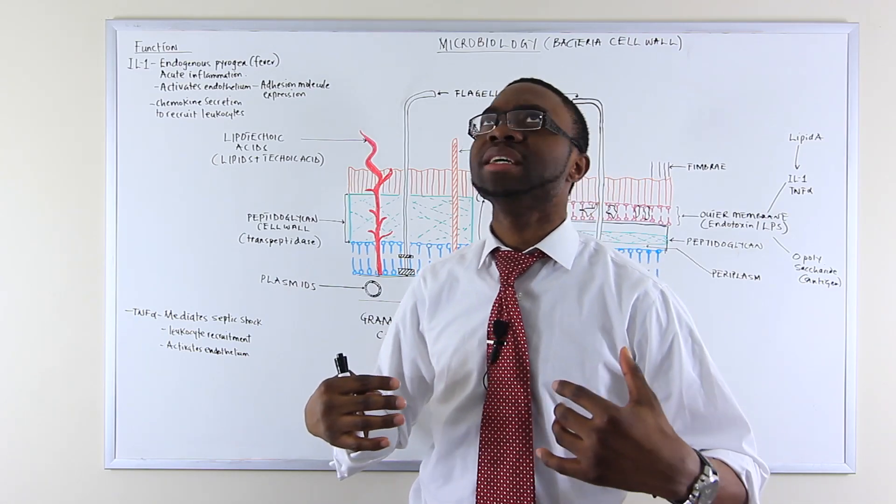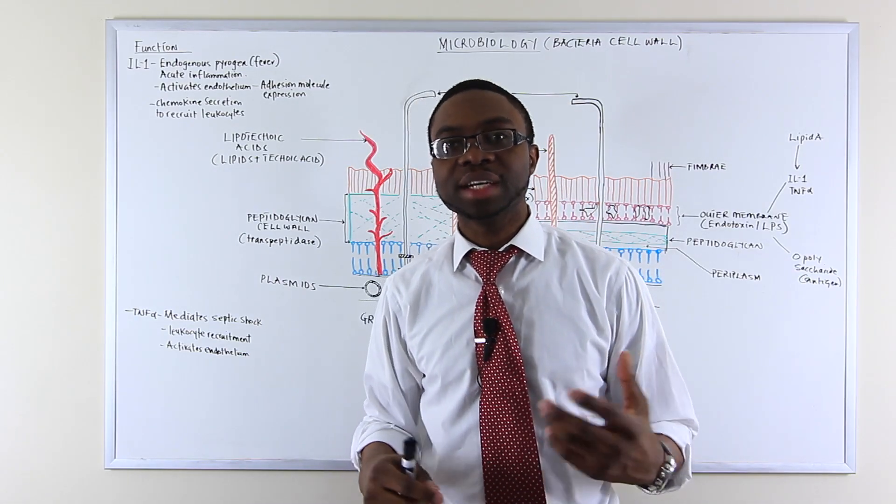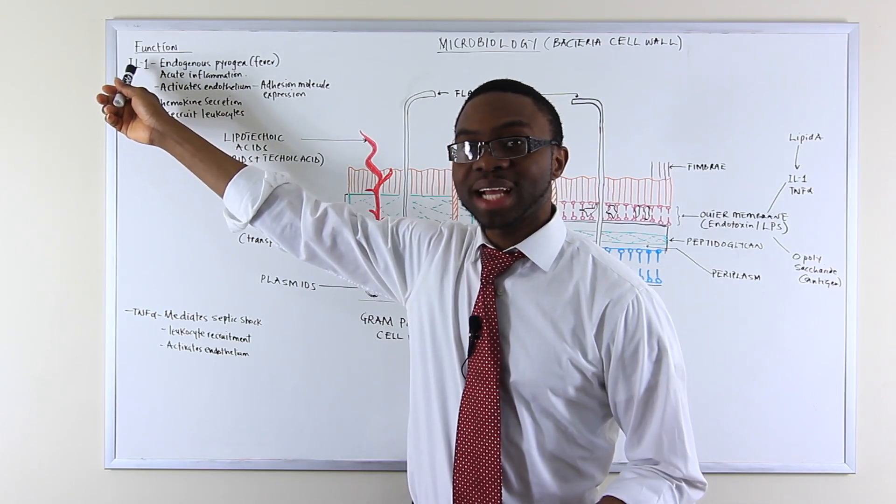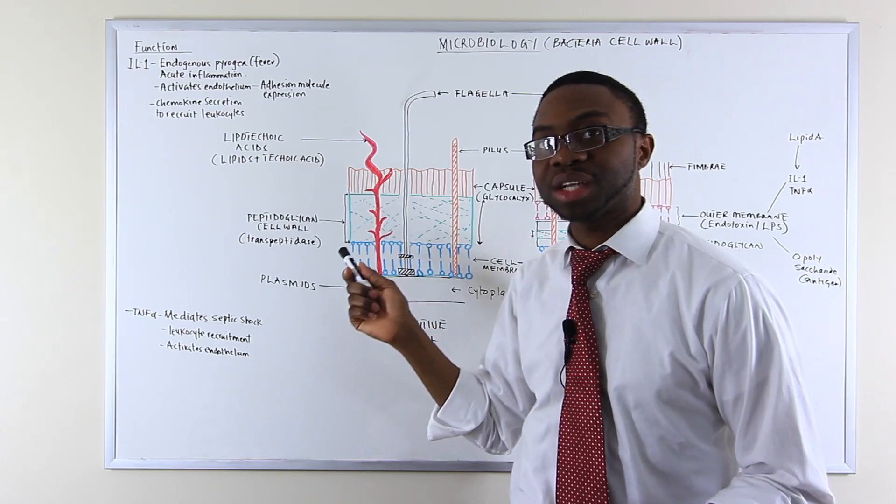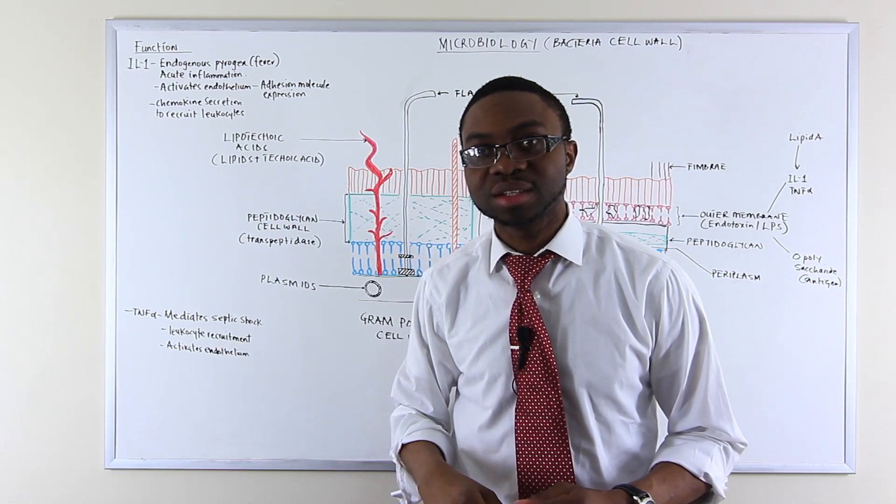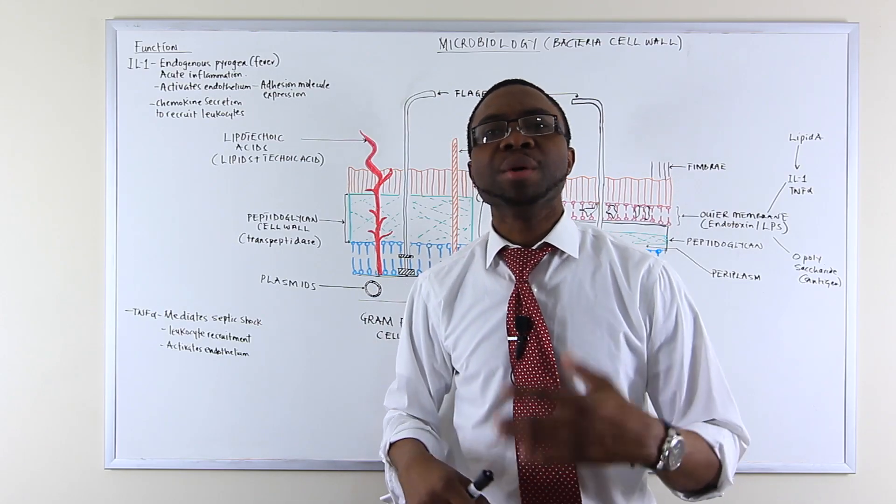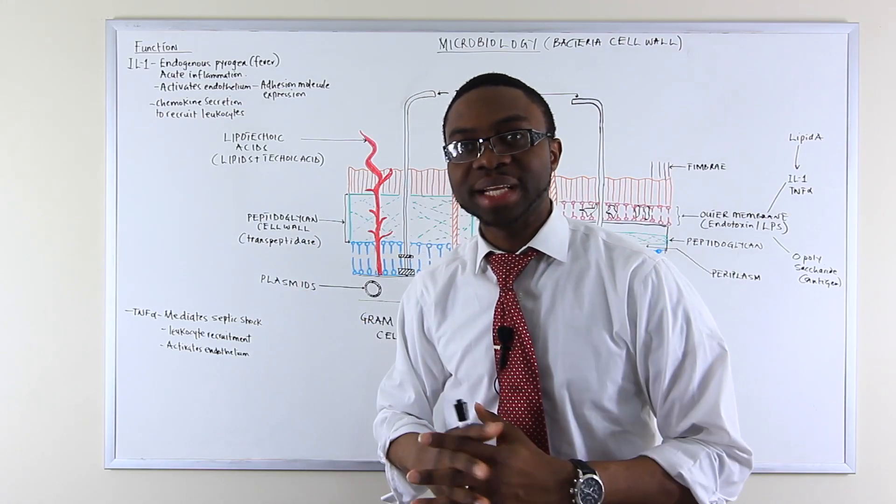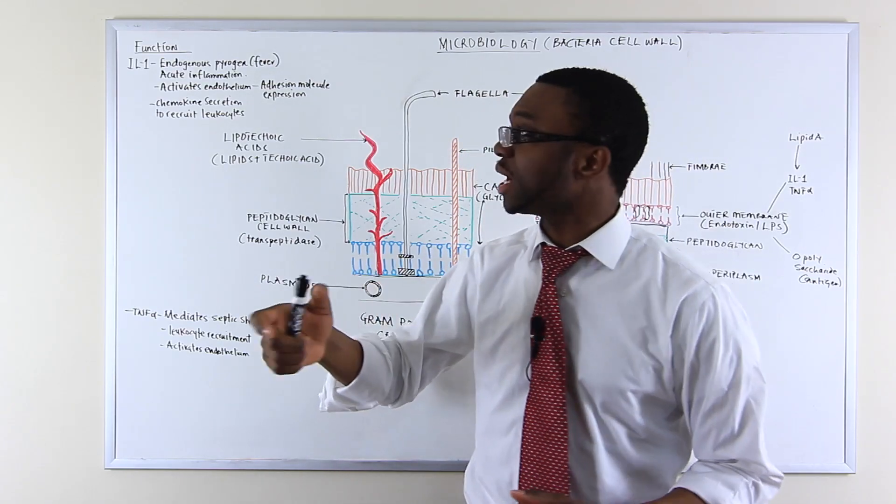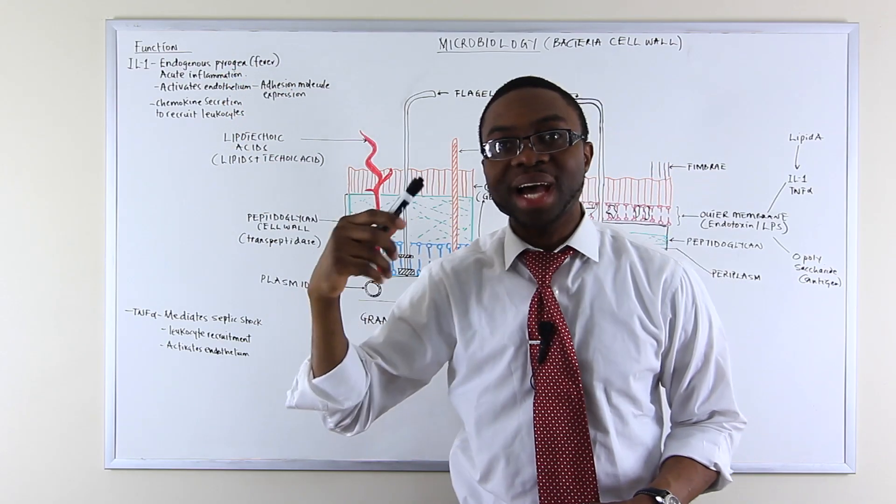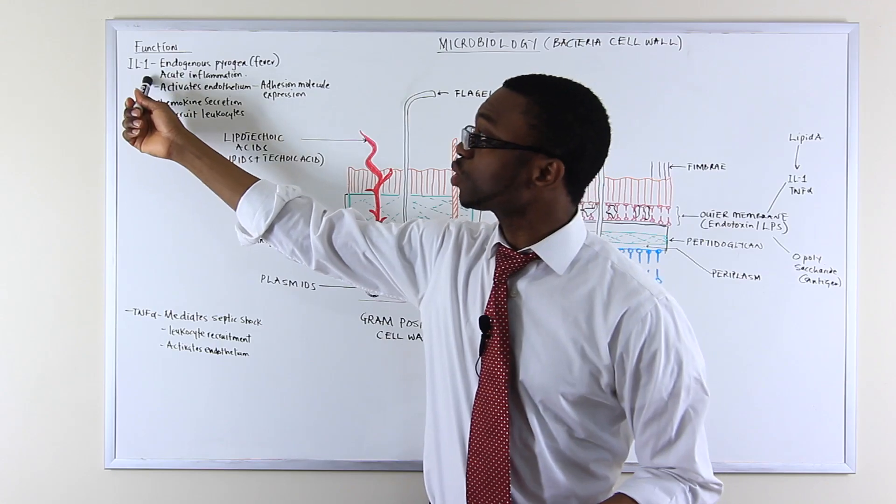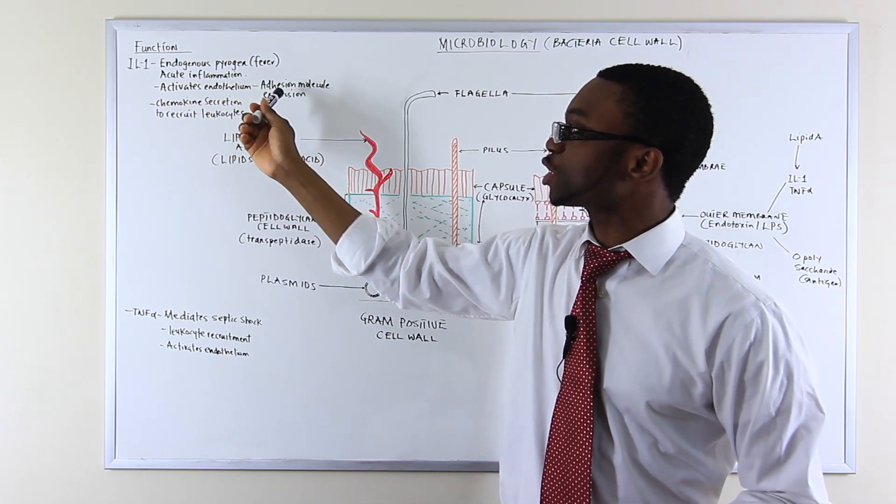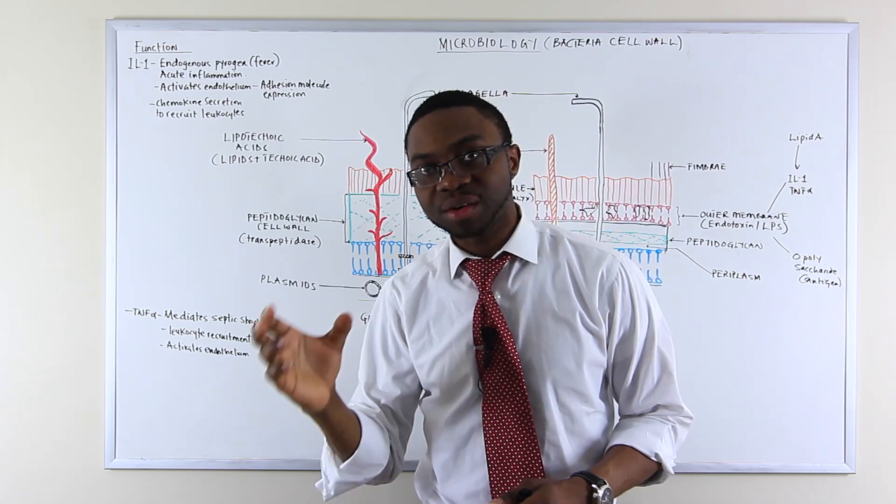What does that mean? Endogenous, inside my body. Pyro means fever. That means it's a fever inducer. When patients develop fever when they have a bacterial infection, interleukin-1 is being released. The way that's released is because of this lipotechoic acid on the surface of bacteria that causes the body to release these interleukin-1s. It also causes acute inflammation. It activates the endothelium causing expression of adhesion molecules. And it's also a chemokine secretion to recruit leukocytes.